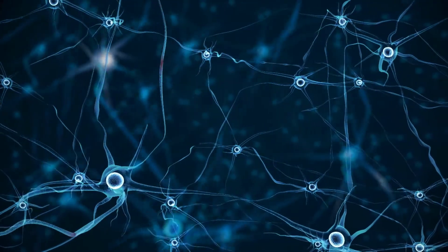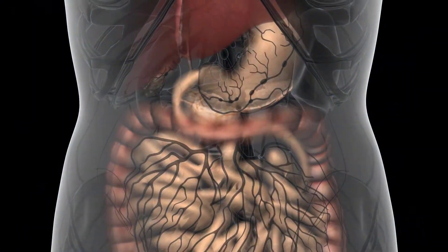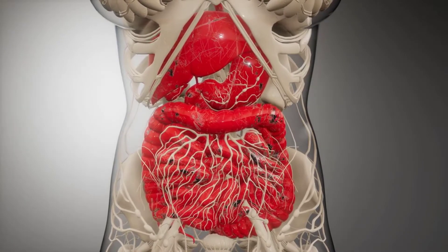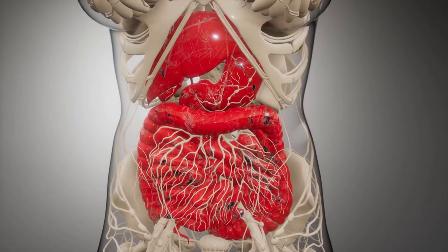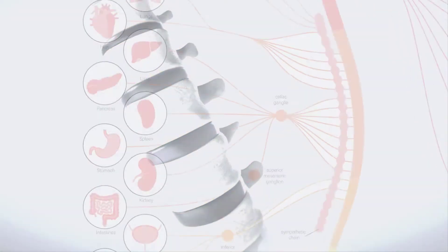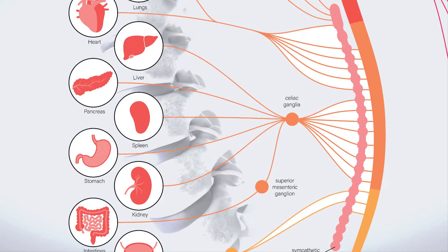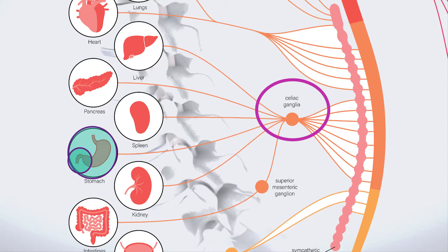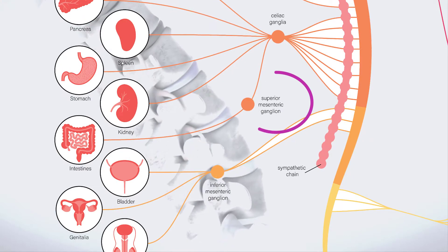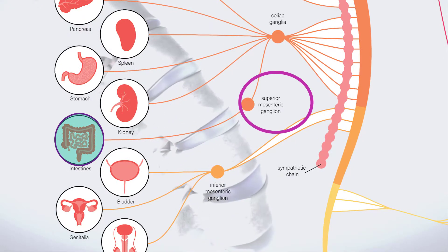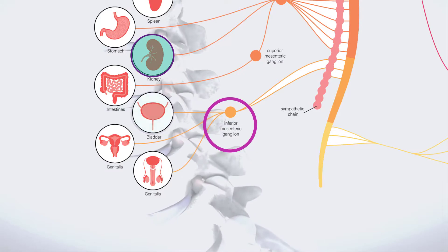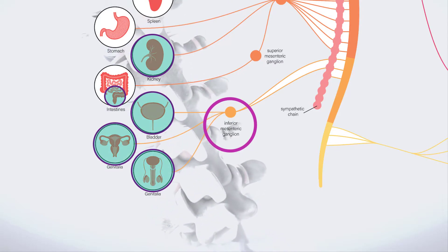In contrast, the abdominal pelvic viscera receives sympathetic innervation from collateral ganglia. The abdominal pelvic viscera receives sympathetic innervation via preganglionic fibers that pass through the sympathetic chain to synapse with collateral ganglia. The splanchnic nerves innervate the hypogastric plexus and three collateral ganglia. The celiac ganglion innervates the stomach, duodenum, liver, pancreas, spleen, and kidney. The superior mesenteric ganglion innervates the small intestines and the initial segments of the large intestine. The inferior mesenteric ganglion innervates the kidney, bladder, sex organs, and terminal portions of the large intestine.